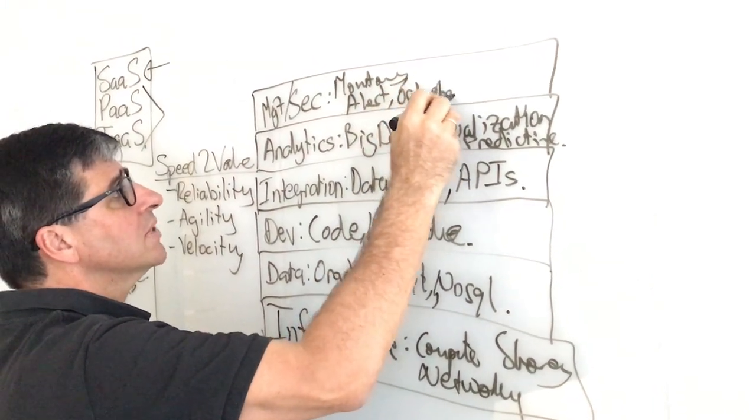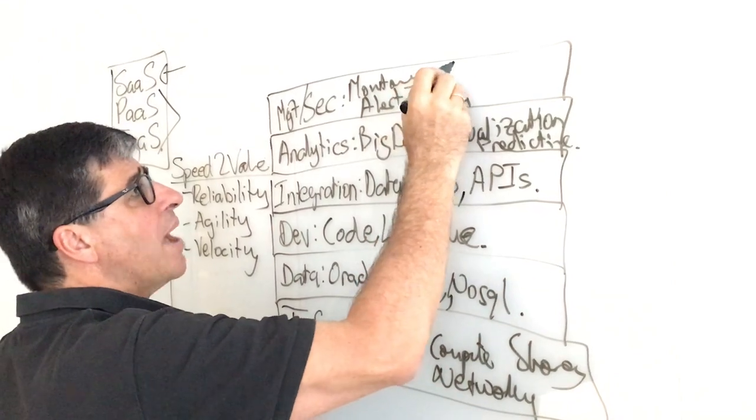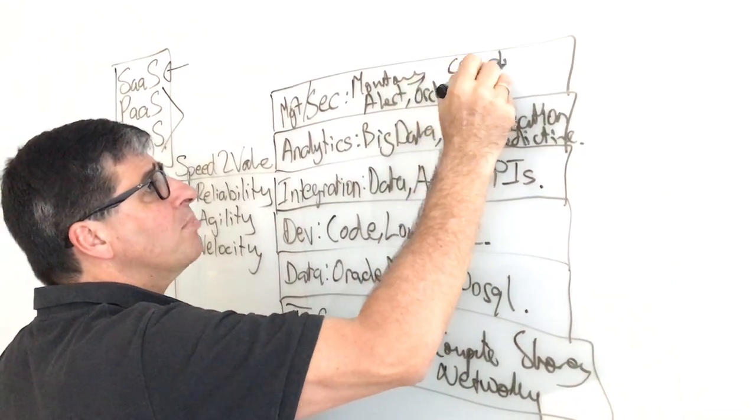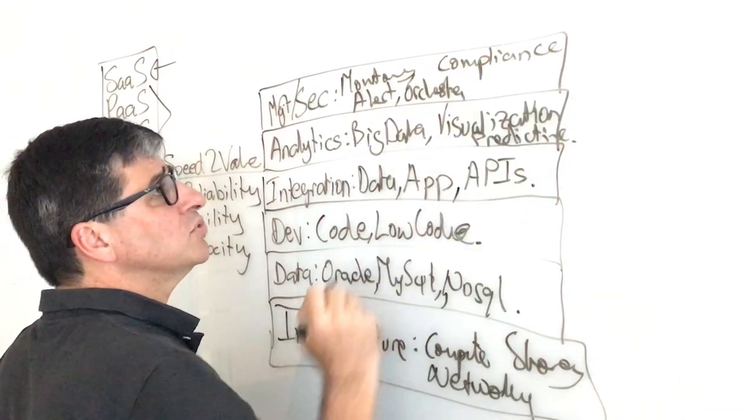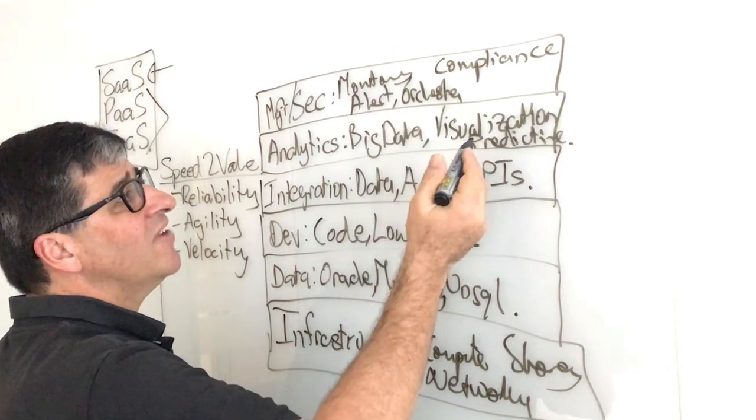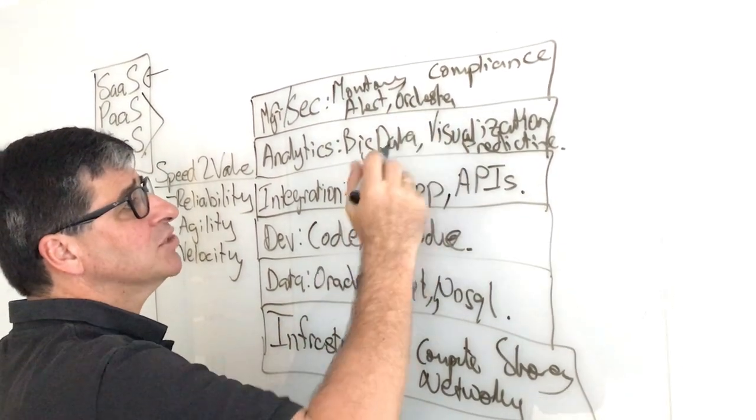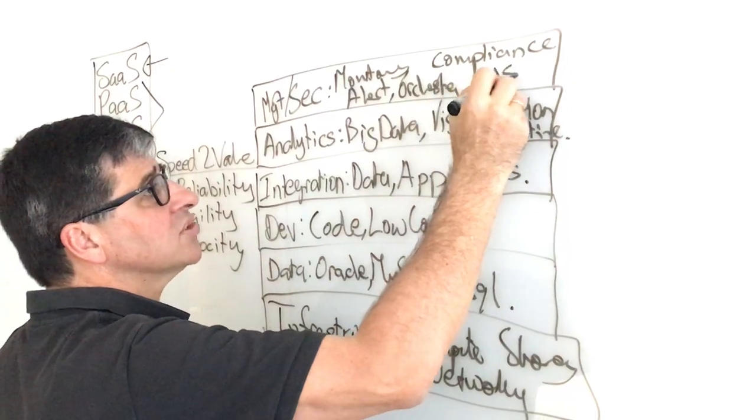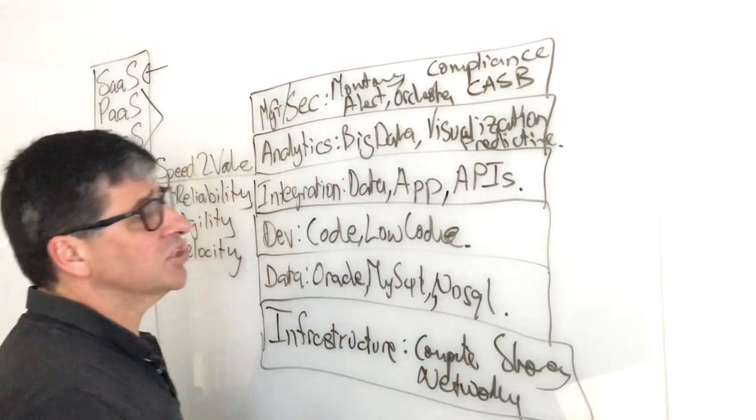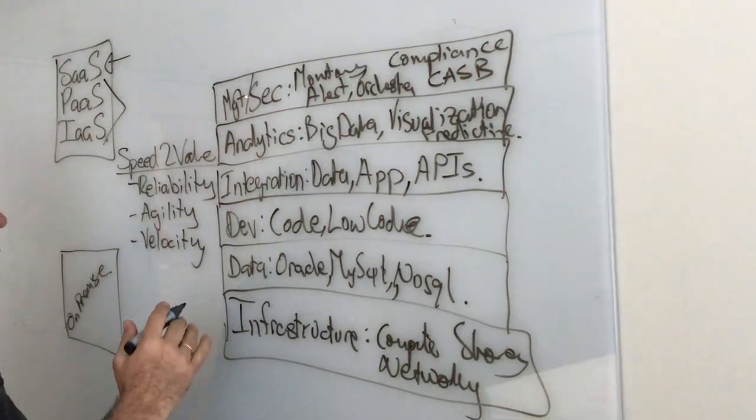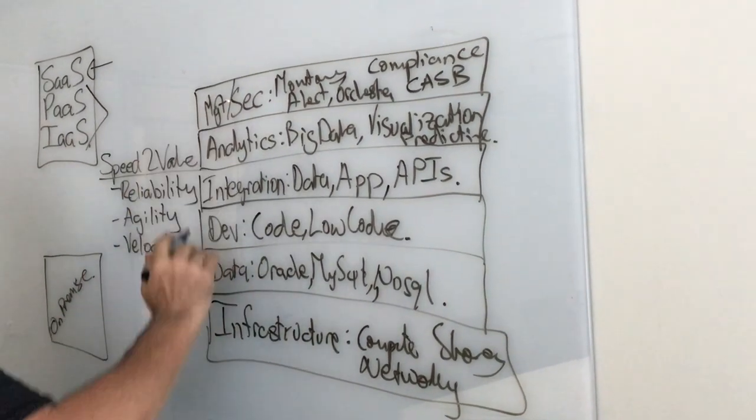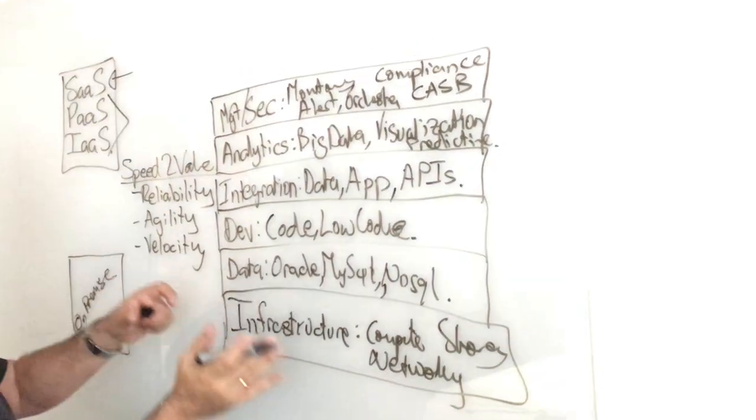From a security perspective, you want to be able to make sure you're getting compliance occurring with people doing the right things, and then being able to understand the patterns between different applications. That's where we use this concept called CASB, the security broker.